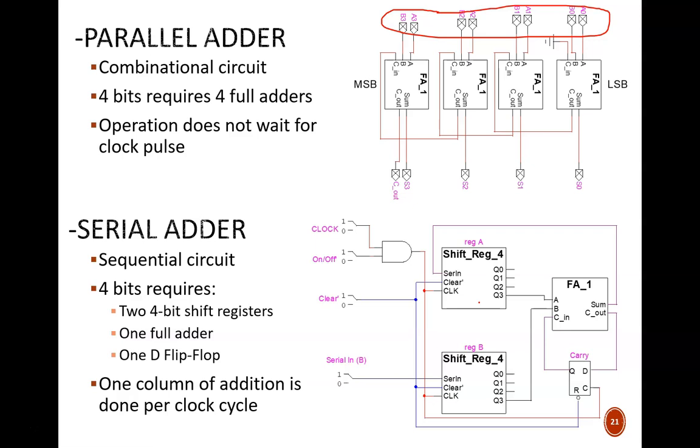Contrast that with the parallel adder, which computes almost immediately. But that almost becomes significant as we scale up the number of bits. This cascading design of Cout to Cin causes propagation delays to increase linearly with each bit added.